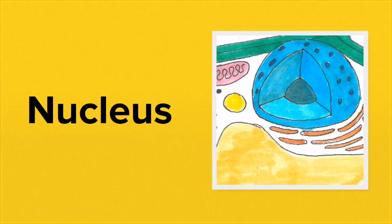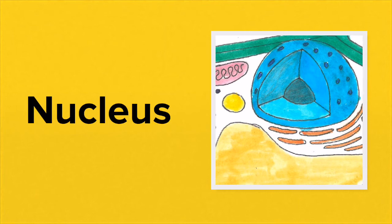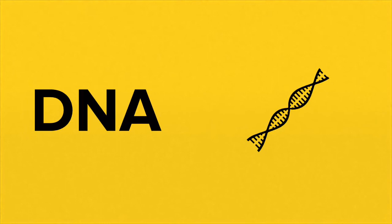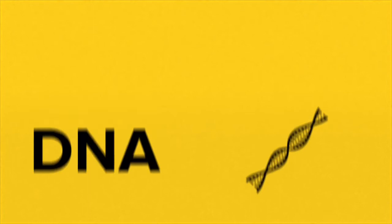All eukaryotic cells contain a nucleus, which is surrounded by its own double membrane. This membrane has pores to allow the movement of material into and out of the nucleus. Contained within the nucleus of every eukaryotic cell is DNA — the genetic material — deoxyribonucleic acid.